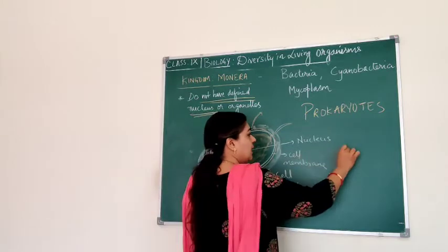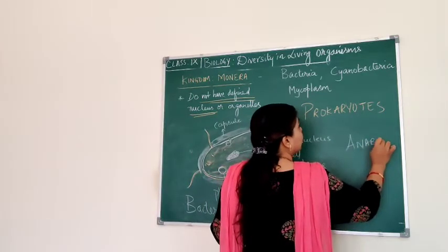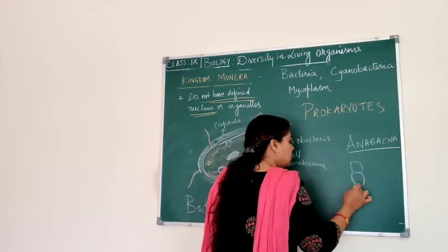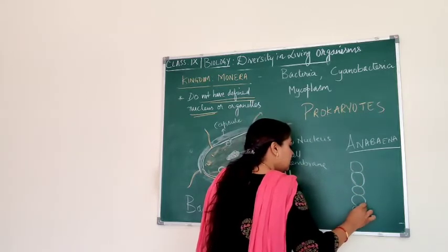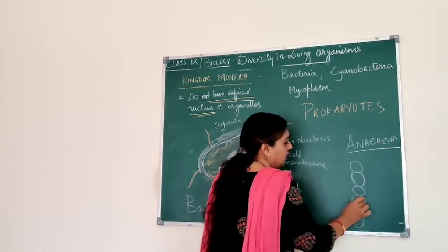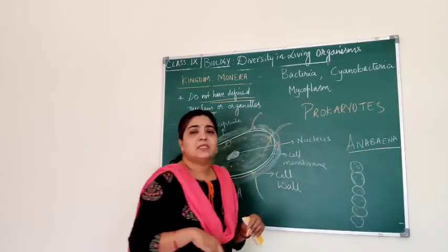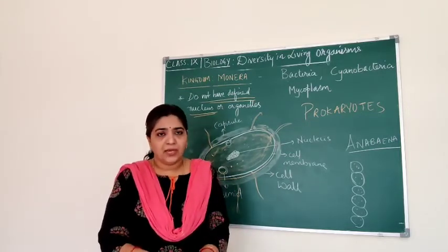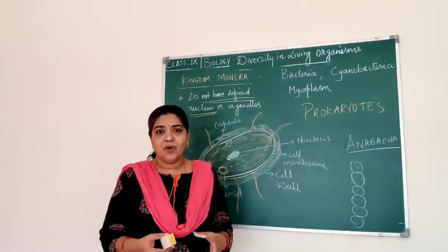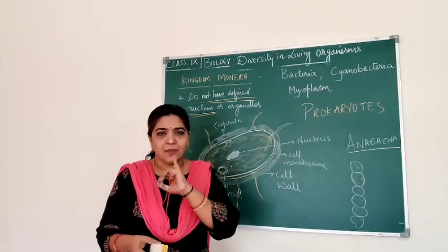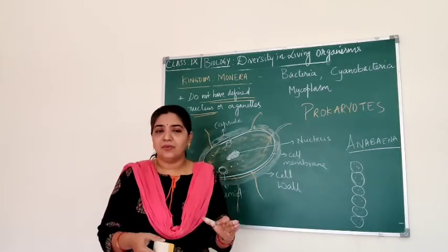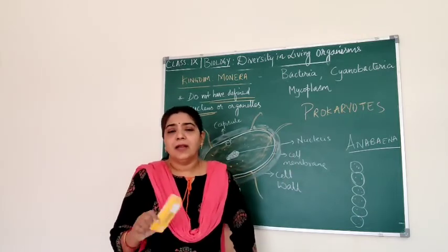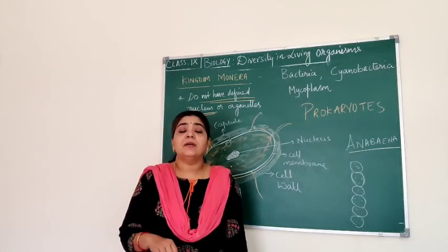We will also be learning about Anabaena and Rhizobium. Anabaena is a cyanobacterium that lives in a filament-like structure. All such cyanobacteria belong to kingdom Monera. So when we identify a prokaryotic, unicellular organism that may be autotrophic or heterotrophic, we place it under kingdom Monera. Next, let us learn about kingdom Protista.